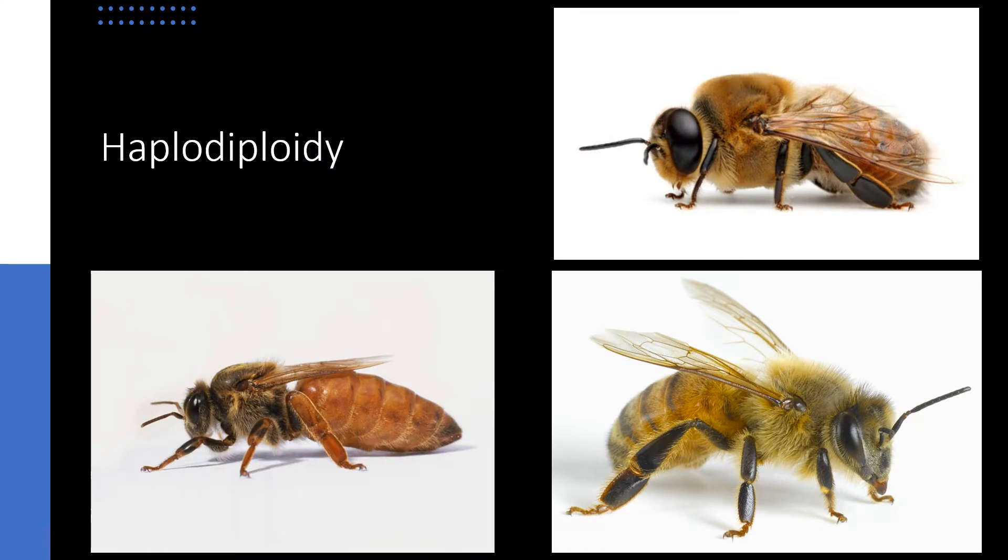So a term that we all need to be familiar with is haplodiploidy, which all this means is that if you are a male bee, you are from an unfertilized egg. If you are female, you are from a fertilized egg. So males are haploid and females are diploid.